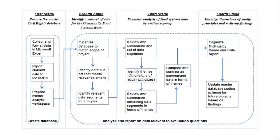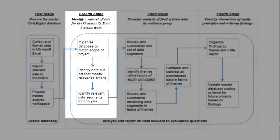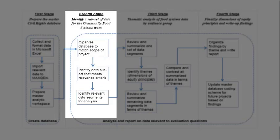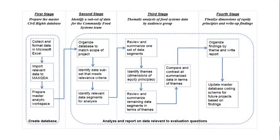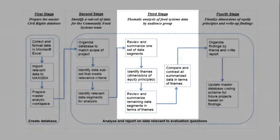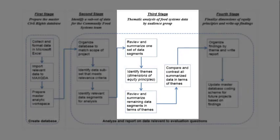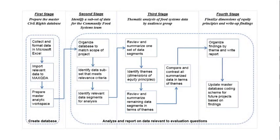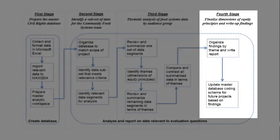The master database includes data that wasn't relevant to the focus of the Community Food Systems team, so the second stage identified relevant data that Christian and his colleagues Lexa and Erin would use for this project. The third stage was the thematic analysis of that data, which involved an iterative process of summarising relevant segments and identifying beams, which represented dimensions of equity principles. The fourth stage finalised these dimensions, after which the team wrote up their findings.